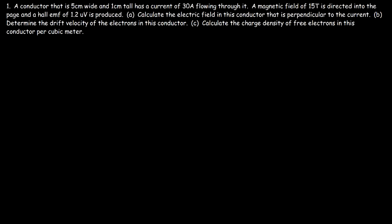A conductor that is 5 centimeters wide and 1 centimeter tall has a current of 30 amps flowing through it. A magnetic field of 15 Tesla is directed into the page and the Hall EMF of 1.2 microvolts is produced. Calculate the electric field in this conductor that is perpendicular to the current.